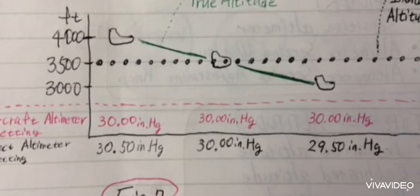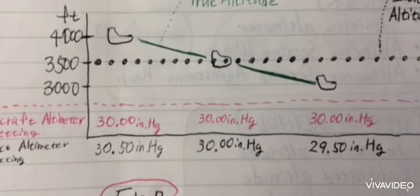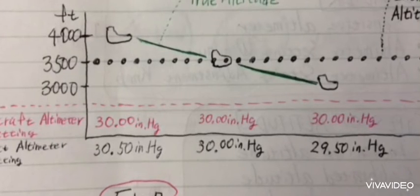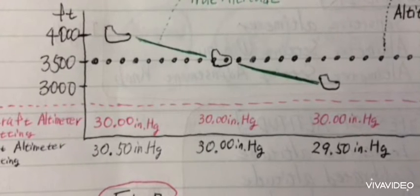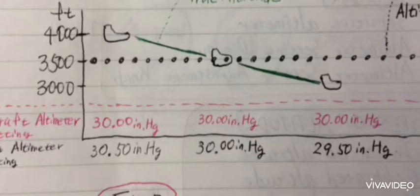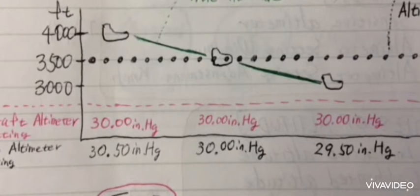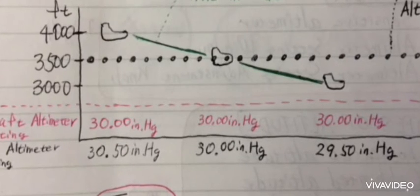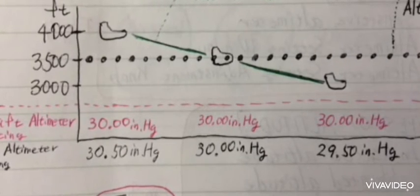When you set the altimeter to the current altimeter setting, if it indicates within 75 feet of the field elevation, it is acceptable for IFR flight.